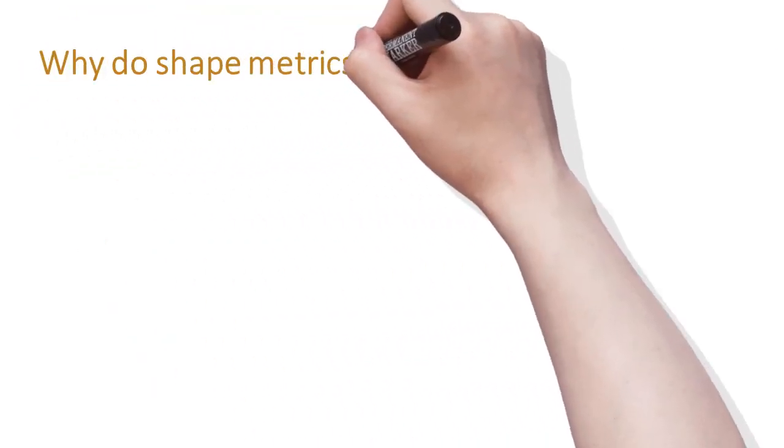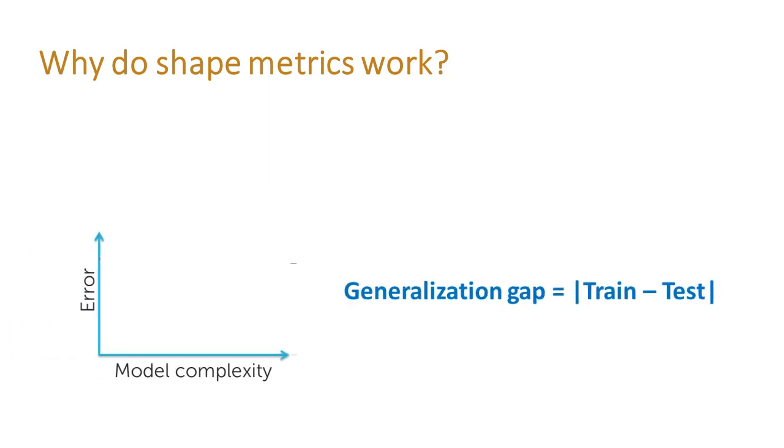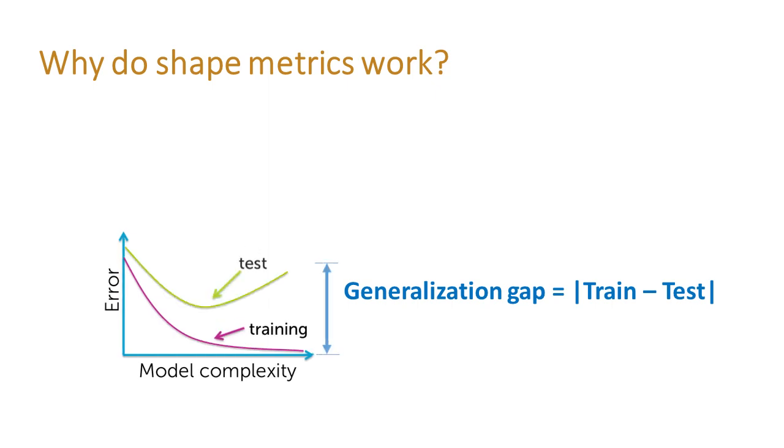So why do shape metrics work better than others? The reason is that most existing metrics are designed to predict the so-called generalization gap, which is the difference between training and test performance. However, predicting the generalization gap is not the same as model quality. In fact, they can either be correlated or anti-correlated depending on the task.